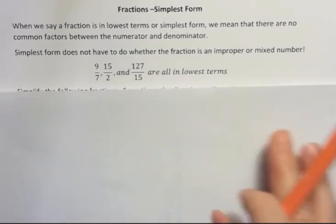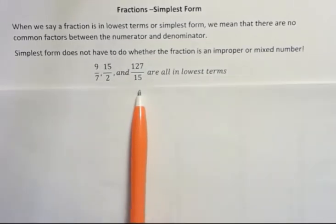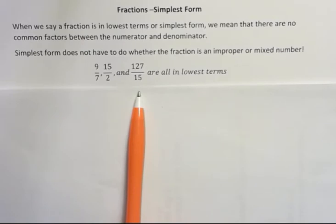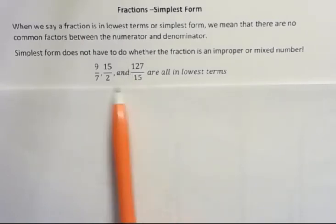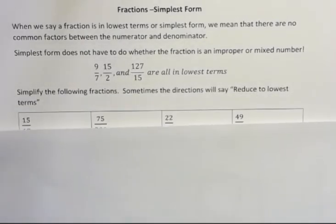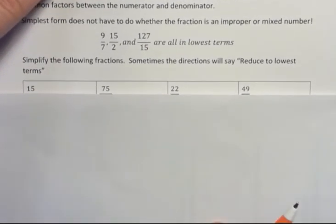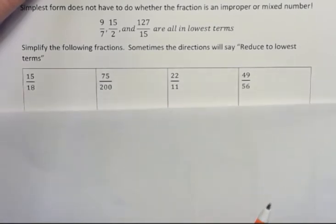Sometimes when you say put into simplest form, people think that means a mixed number, but it doesn't. It just means that there's no common factors between the top and the bottom of that fraction. Simplify the following fractions. Sometimes in the instructions it will say reduced to lowest terms. That means the same thing.